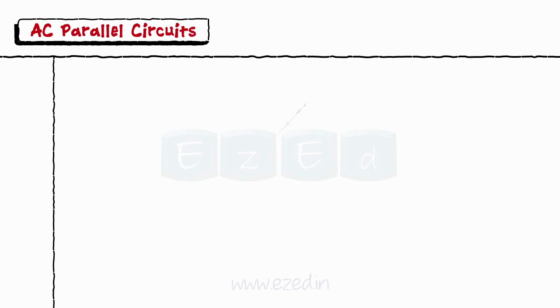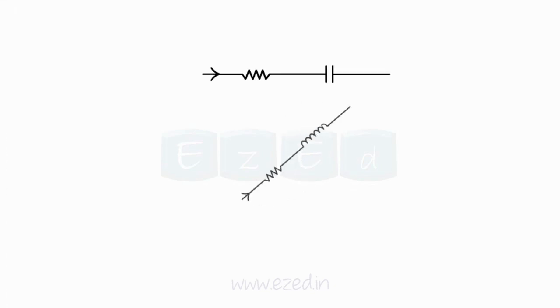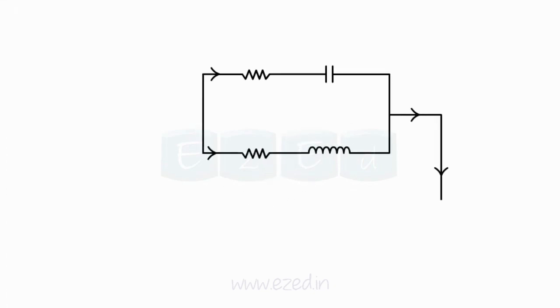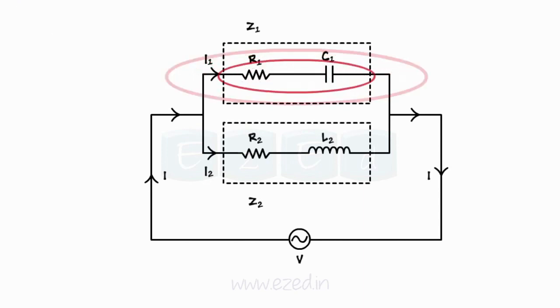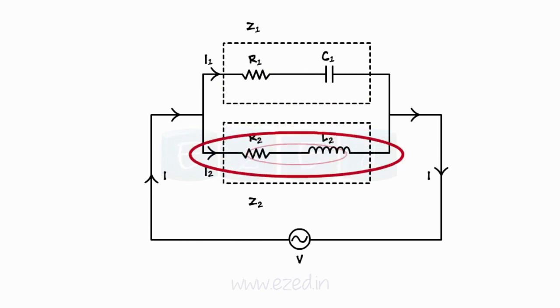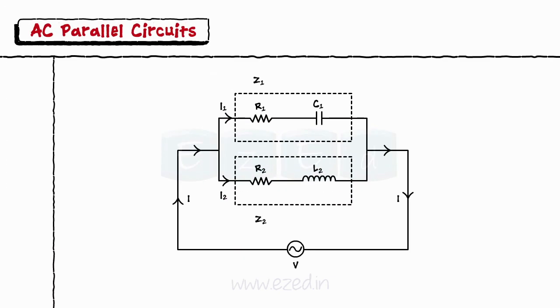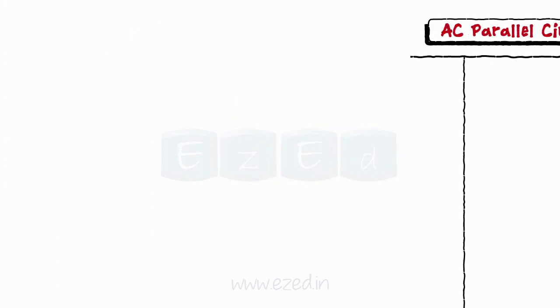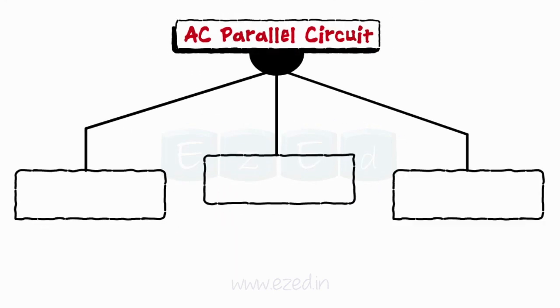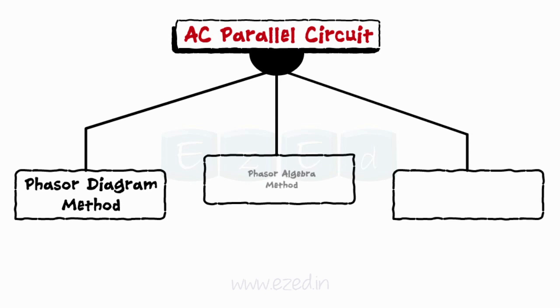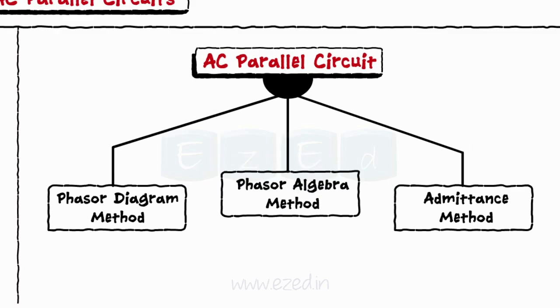While analyzing the AC parallel circuits, we consider them as two or more series circuits connected in parallel. For example, in the diagram shown, the two AC series circuits — RC circuit and RL circuit — are connected in parallel. We have three methods for the analysis of the AC parallel circuits: phasor diagram method, the phasor algebra method, and the admittance method.